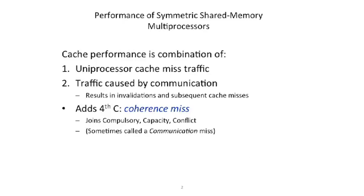A coherence miss is when some other cache or some other entity reaches down into our cache and invalidates something there. This is strictly different from compulsory, capacity, and conflict. It looks closest to a compulsory miss — like a first miss — but some other entity bumped it out of your cache. It's communication coming from other cores, and even in a snooping protocol or symmetric shared memory multiprocessor, that other traffic will actually bump things out of your cache.